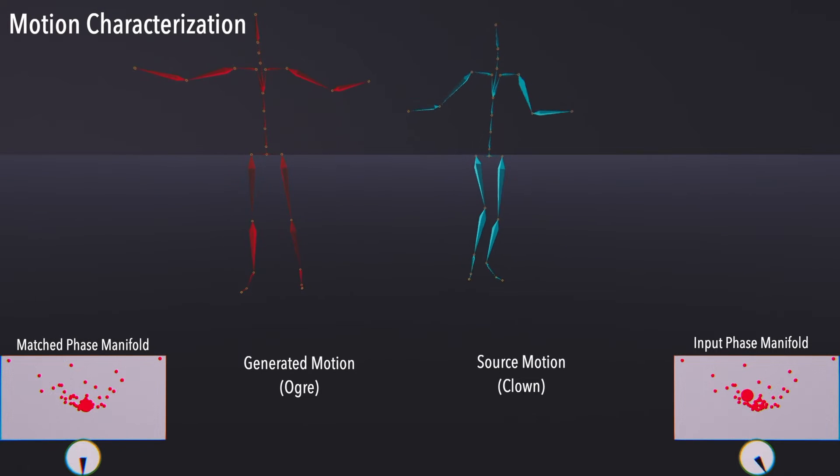Since our latent space captures the core semantic meaning and alignment of motions, we can achieve character stylization immediately by transferring motions between datasets with different characteristics.